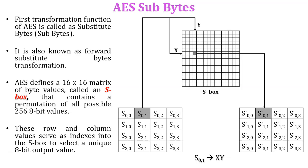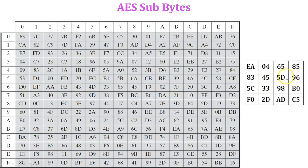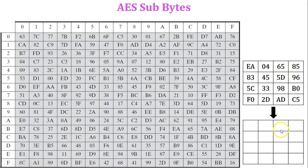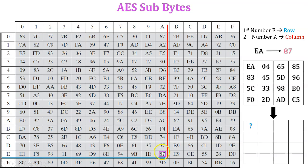Let's take one example to understand AES SubBytes. This is my plain text matrix, and I will map all these values in the S-Box to generate a new AES SubBytes matrix. The first value of the plain text matrix is EA. Here E indicates the row and A indicates the column in the S-Box. When this row and column intersect, it gives the new value 87 — so EA is replaced with 87.